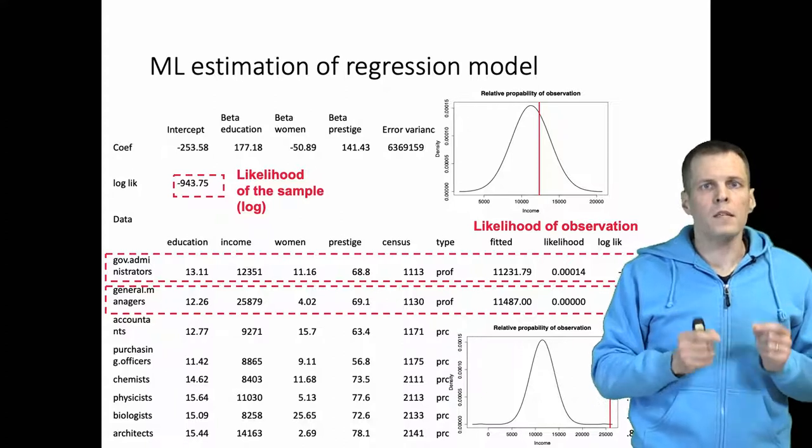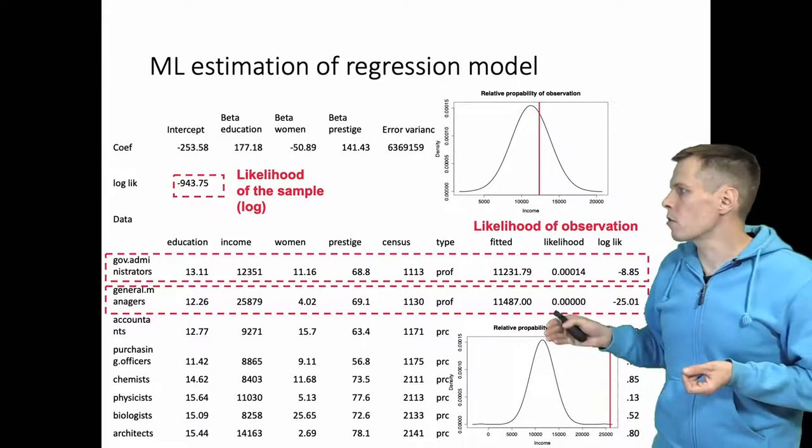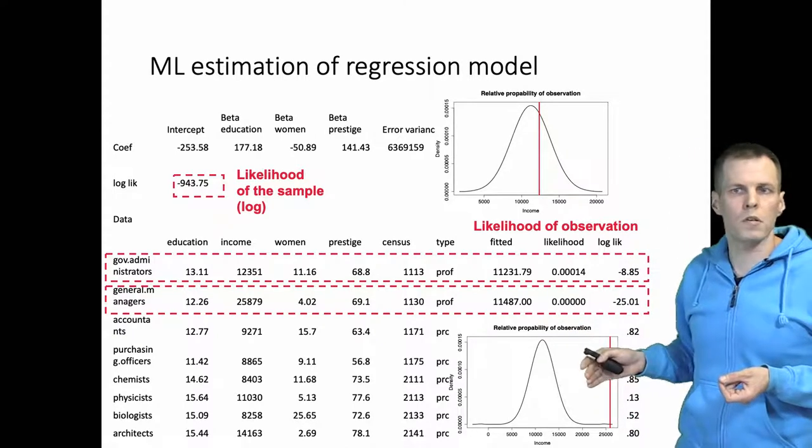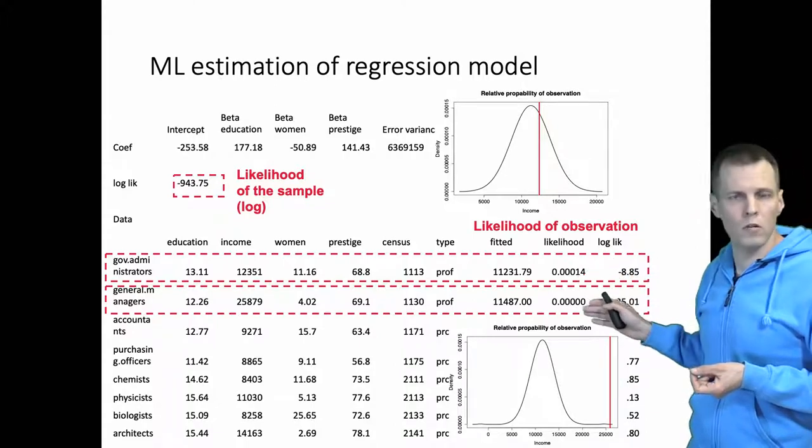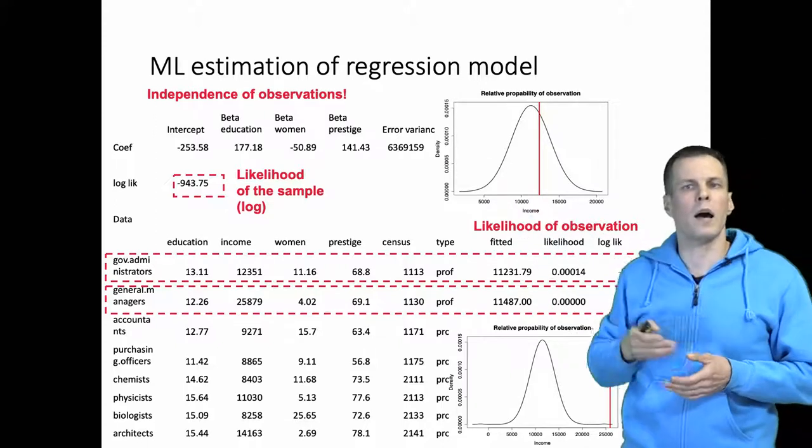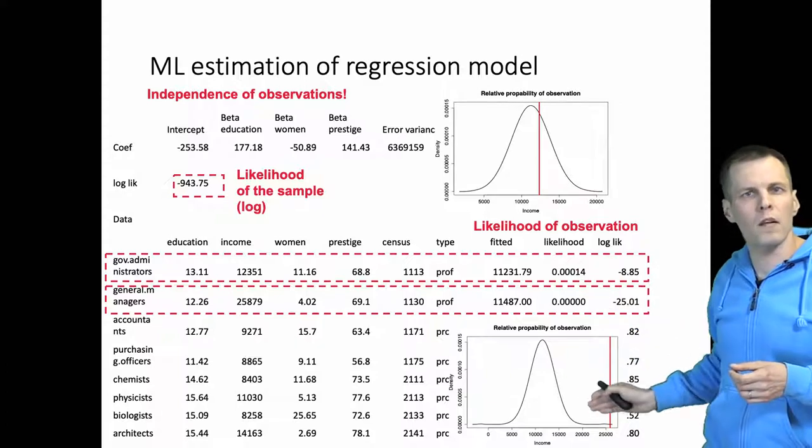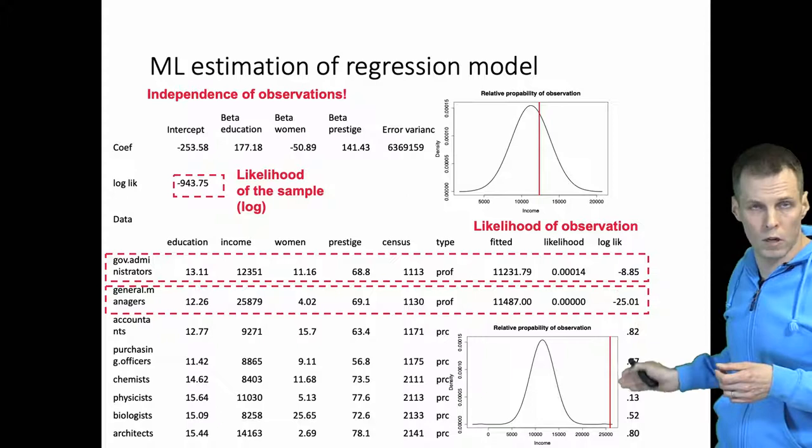This makes critically the independence of observations assumption. So it works because these are independent probabilities or independent likelihoods. So the value of government administrators does not depend on the value of the general managers. The independence of observations assumption allows us to multiply these likelihoods or sum these log likelihoods together.